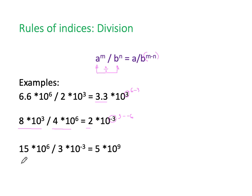And our final one here, 15 times 10 to the 6 divided by 3 times 10 to the minus 3, 15 divided by 3 is 5, so we end up with 6 minus minus 3, giving us 9.